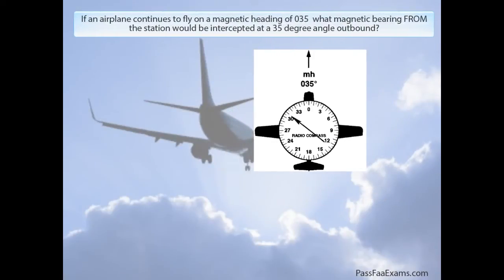what magnetic bearing from the station would be intercepted at a 35 degree angle outbound? And the possible answers are 035 degrees, 070 degrees, or 215 degrees. Now for the simple solution, let's take a look at the next slide.